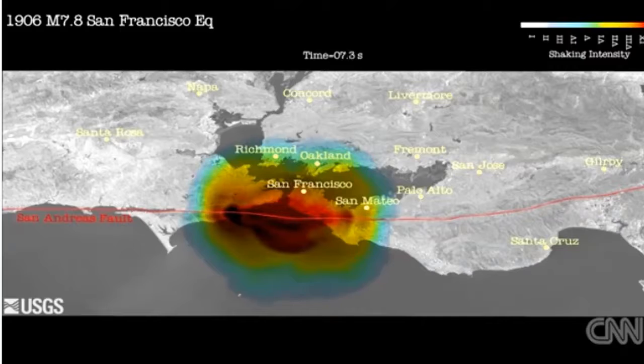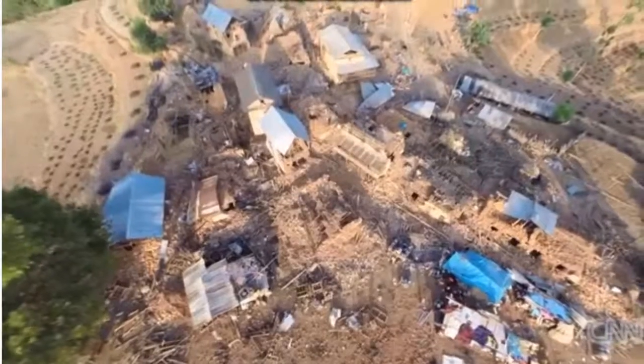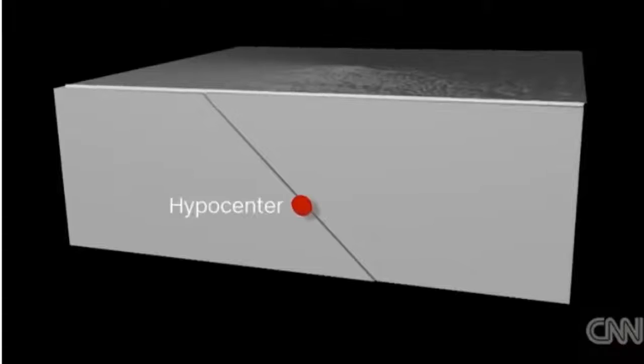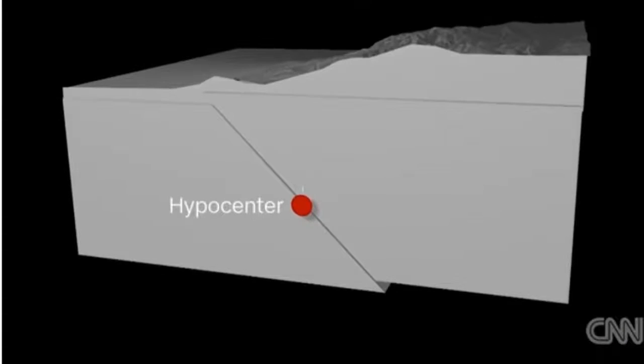Number two: an earthquake can occur very near the surface of the earth — those earthquakes are typically very destructive — or as deep as 400 miles down into the crust. Where the shaking actually happens is called the hypocenter, but directly above it on the surface, that's called the epicenter.